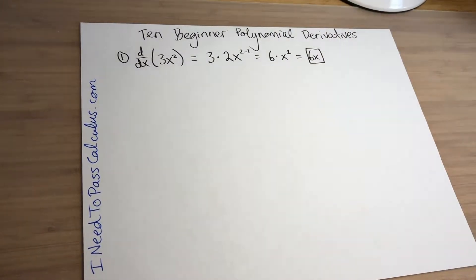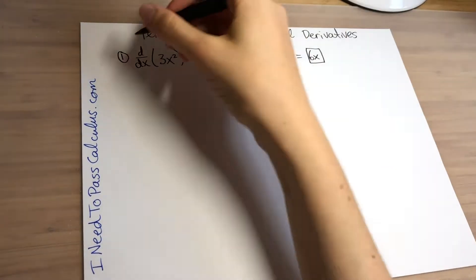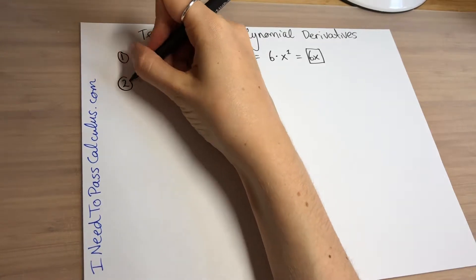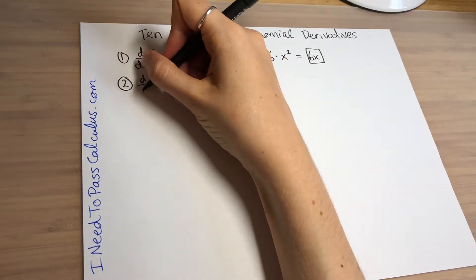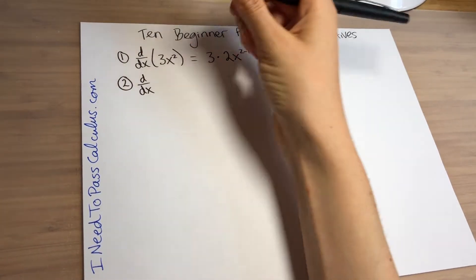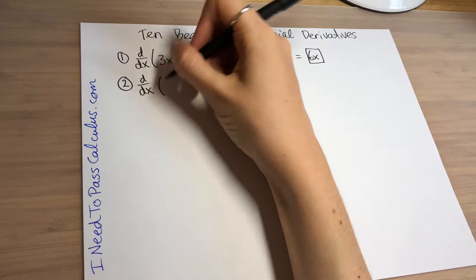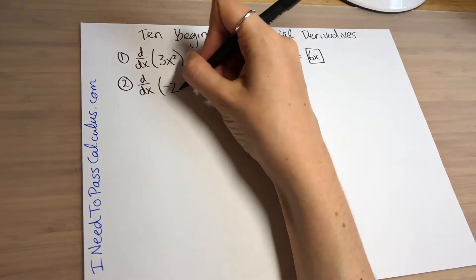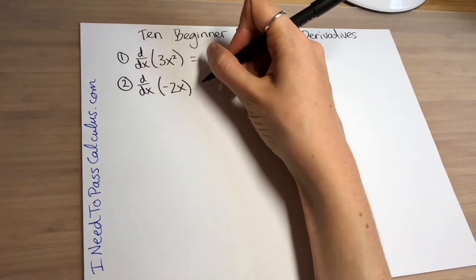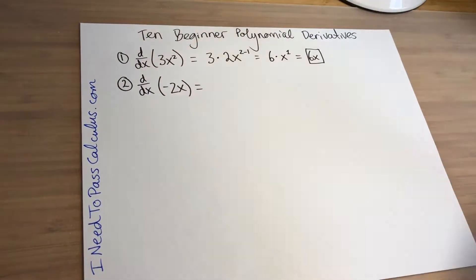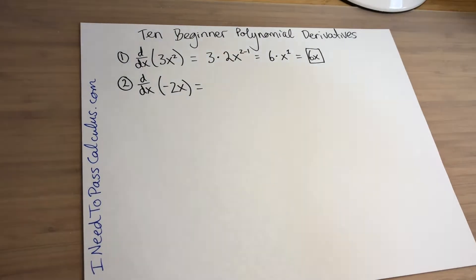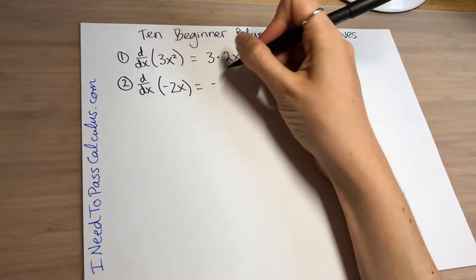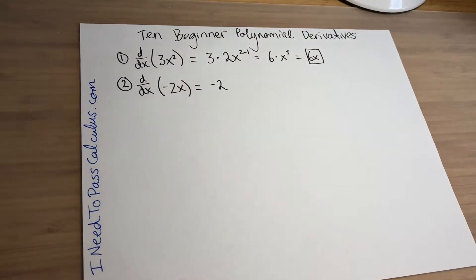We're going to do 10 total examples here, so gradually by the end it should get more and more comfortable. For problem two, we're taking the derivative of negative 2x. Remember that a plain x is the same thing as x to the power of positive 1.